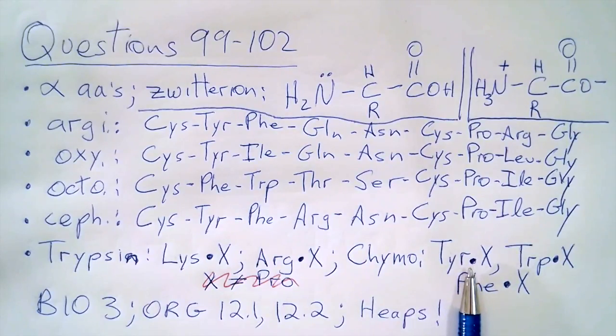Next there's chymotrypsin, and we find out that it can cut on the right side or carboxyl side of tyrosine, tryptophan, and phenylalanine. Now that all the rules are clear, it'll be very easy to answer the questions.